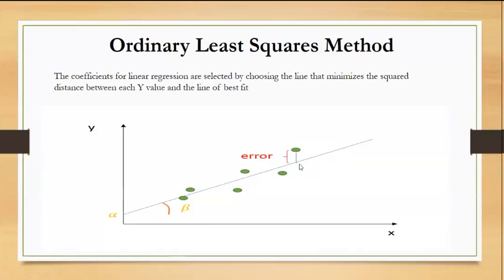The predicted value is what is shown by the straight line. Now take a square of this error for all records and add the square of this error. The line that gives the minimum value for the sum of errors is the line of best fit. This procedure to identify the line of best fit is called ordinary least squares method.